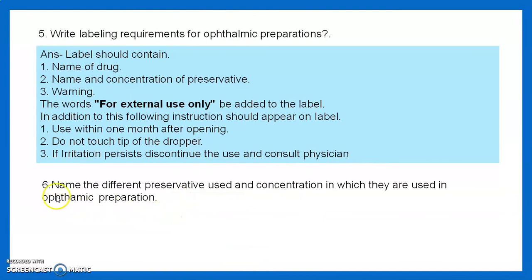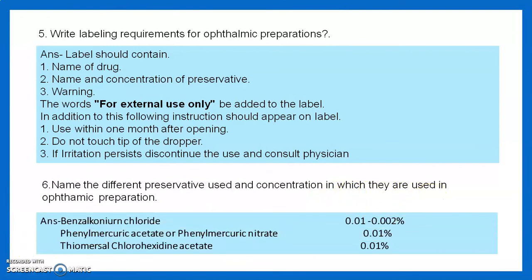Question 6: Name the different preservatives used and their concentrations in ophthalmic preparations. These are: benzalkonium chloride at 0.01 to 0.002% concentration; phenyl mercuric acetate and phenyl mercuric nitrate at 0.01 or 0.02%; thiomersal; and chlorhexidine acetate at 0.01%.